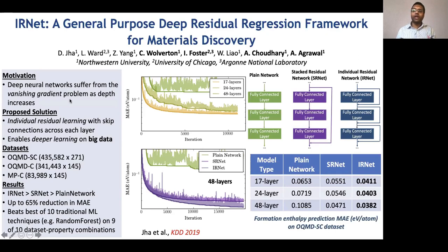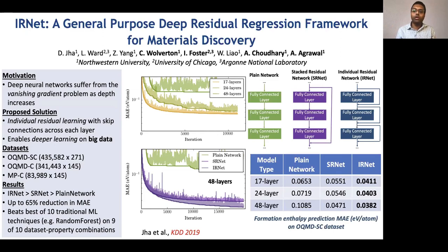The way these networks are trained is by back-propagating the gradient of the error with respect to the weights. As the gradients travel backward, they get multiplied by different data values — typically small numbers — so by the time they reach the beginning of the network, the gradients become almost zero. The network then stagnates and there is no more training. Here you can see a 17-layer network learning curve, where the y-axis is error (lower is better) and the x-axis is training time. As you increase from 17 to 24 to 48 layers, the model actually becomes worse.